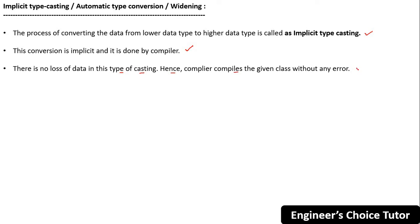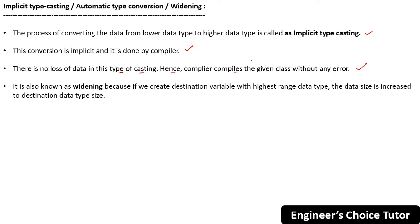Because there is no loss of data or loss of information, the compiler compiles the given class without any error. It is also known as widening because if we create a destination variable with a higher-range data type, the data size increases to the destination data type size.